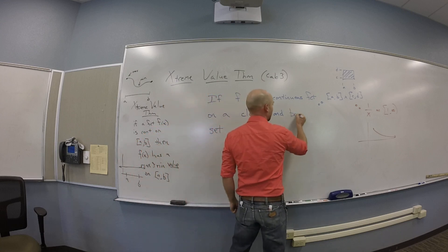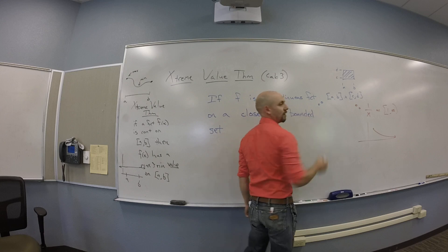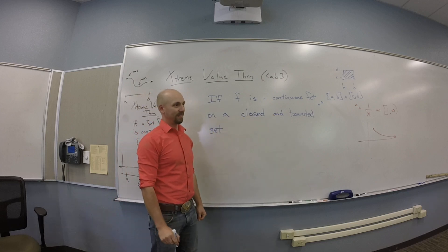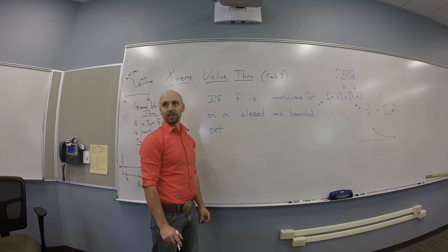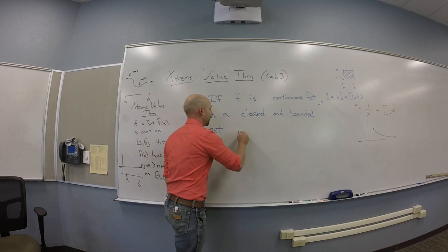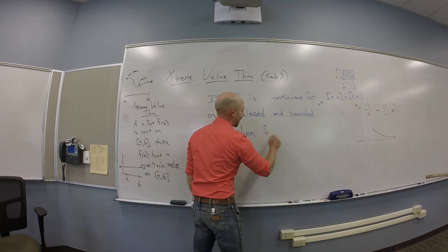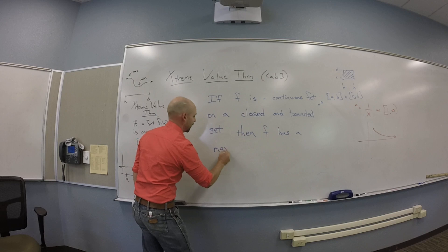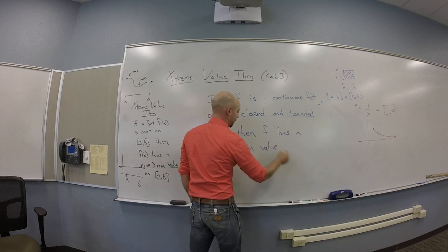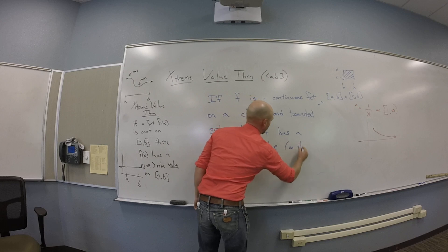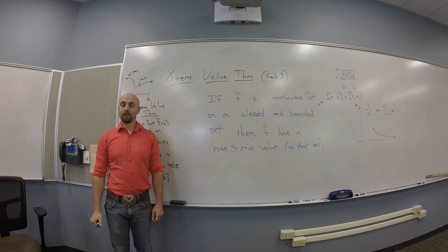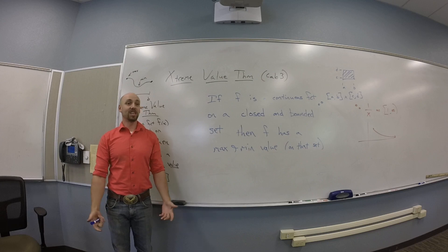So I need to keep this thing from running off to infinity. So I'm going to put a word in here that means it doesn't run off to infinity. Oh, bounded. Okay. So I'm saying that this set has to be closed and bounded. So I've got a continuous function on a closed and bounded set. Then f has a max and a min value, all on that set. This is an output thing, right?